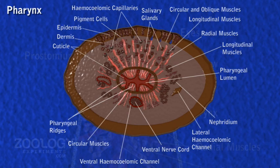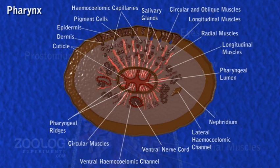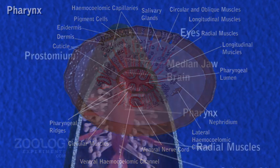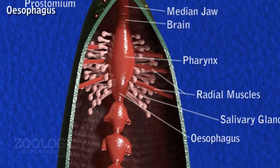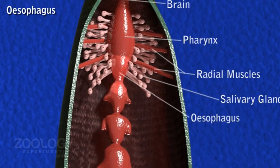Many radial muscles connect the wall of the pharynx with the body wall. The esophagus is a remarkably short and narrow tube through which the pharynx leads into the crop. It has a very narrow lumen and a much folded epithelial lining.